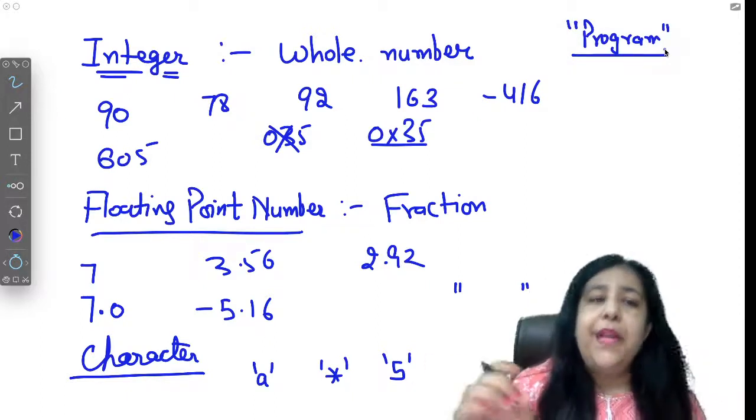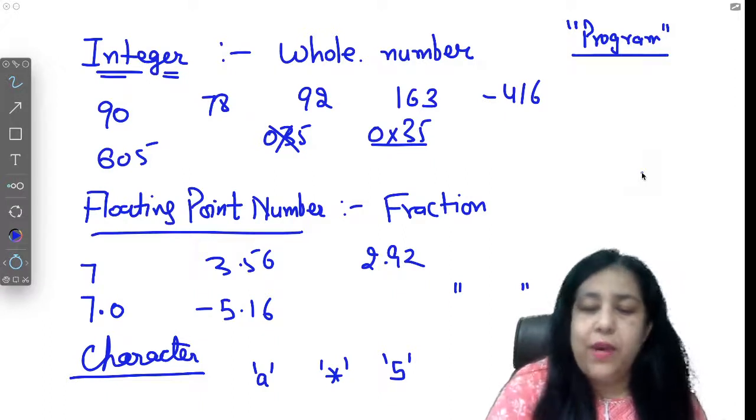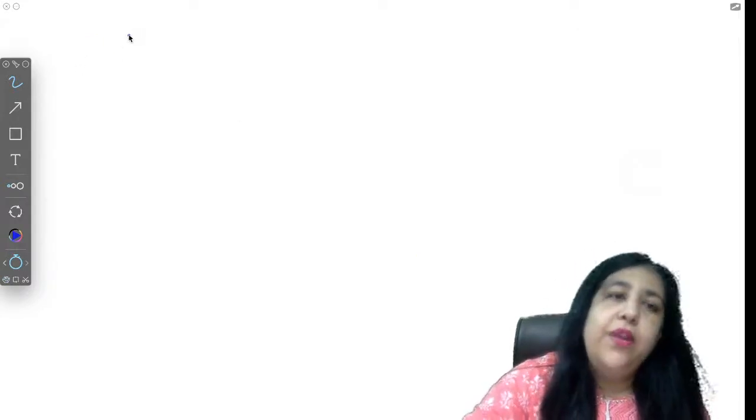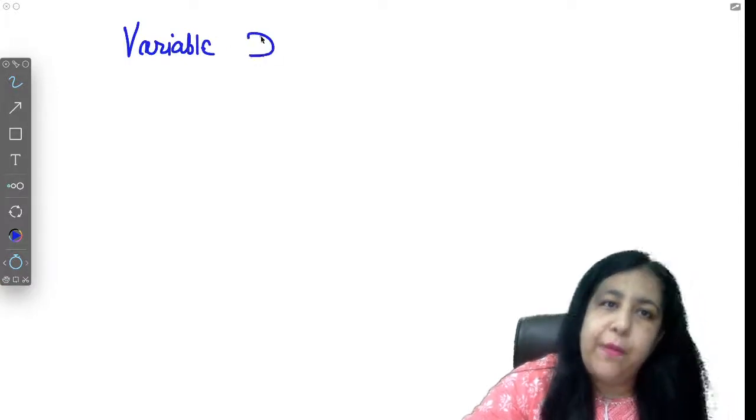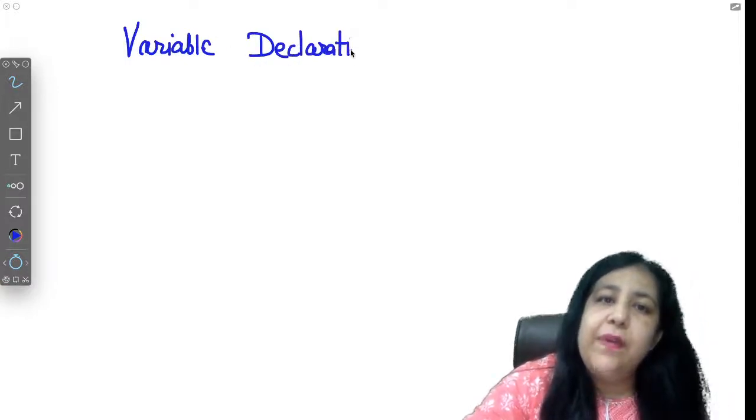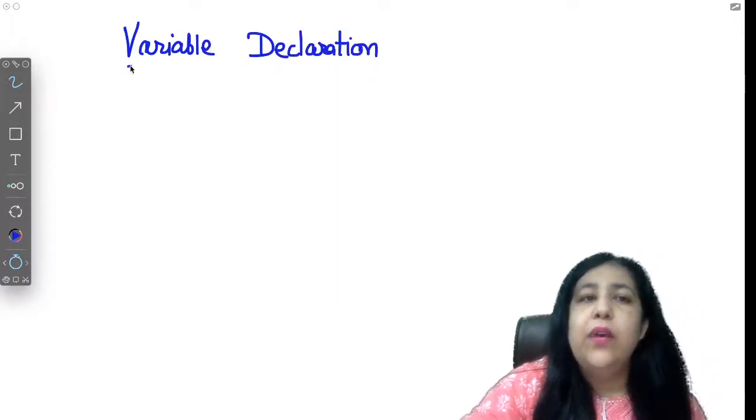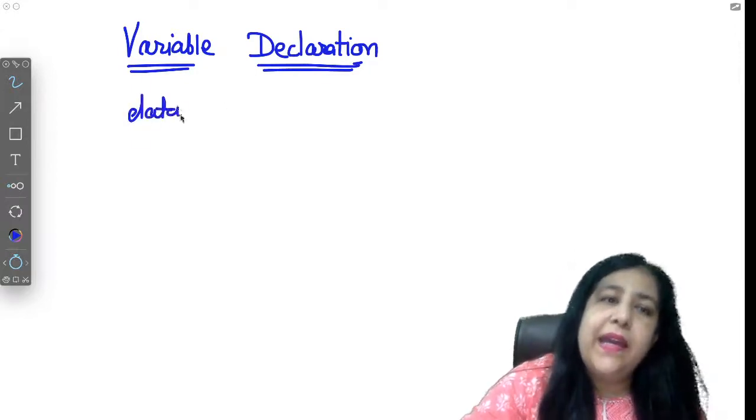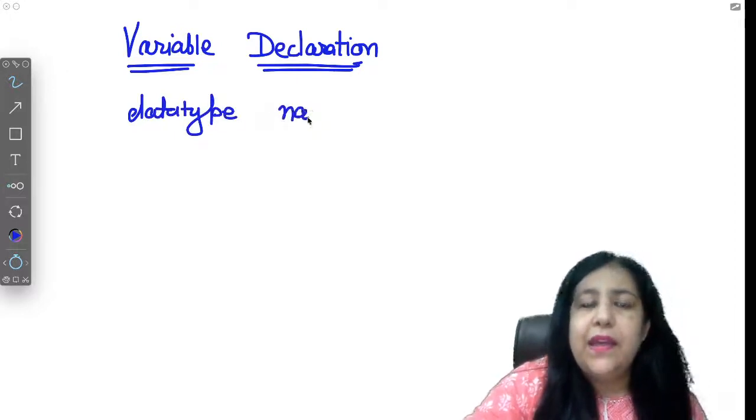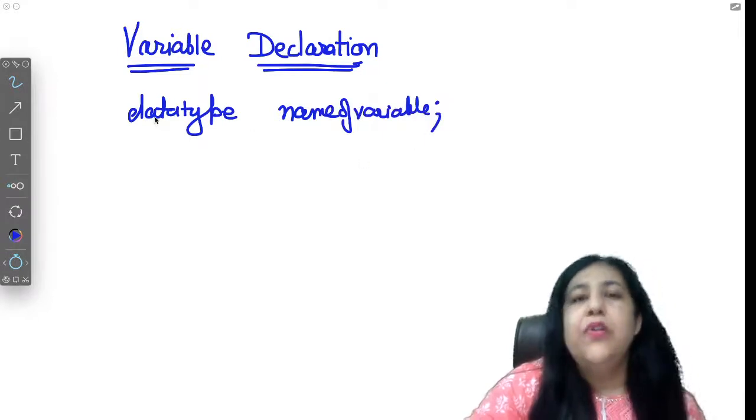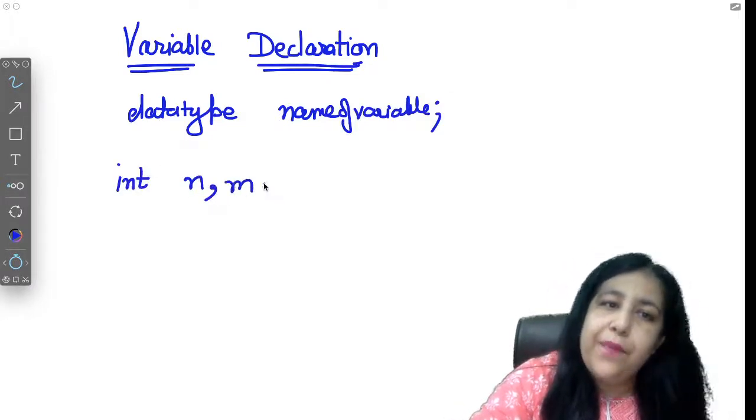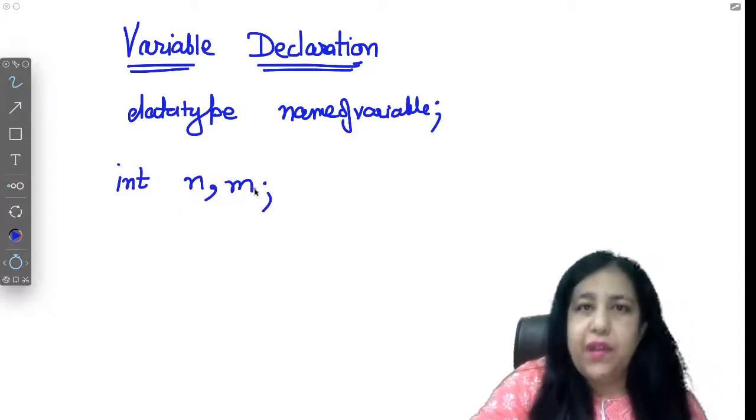Constant values we can take directly, but variables have to be declared before using them. We have to tell what type of value the variable will store. This is called variable declaration. And its syntax is that you have to specify the data type with the help of a keyword, give a space, and then you have to give the name of variable and put a semicolon. So data type, space, name of variable, semicolon. Like I wrote int n, m.